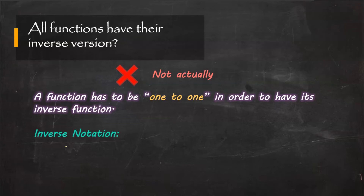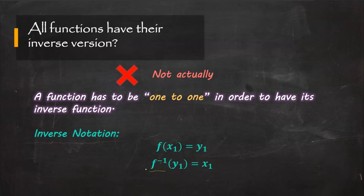The inverse notation — given a function, let's say f(x₁) = y₁ — is f inverse, written with a negative 1 superscript. It looks like a negative power, but it's not, because this is on the function, not an exponent of a variable. Sometimes it might be confusing. So here we have f⁻¹(y₁) = x₁.